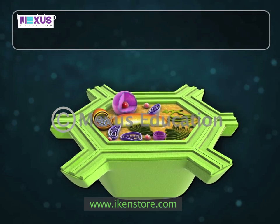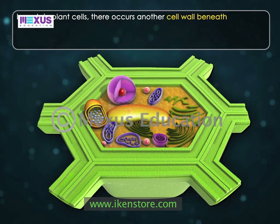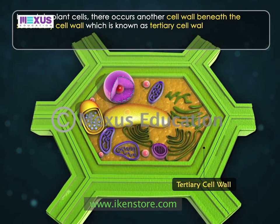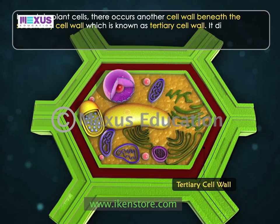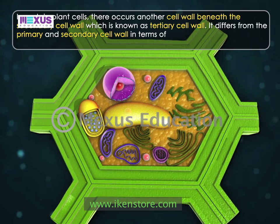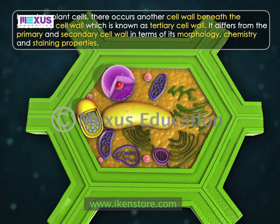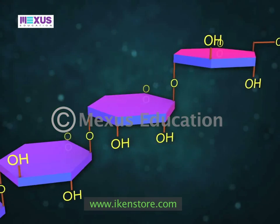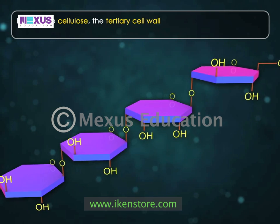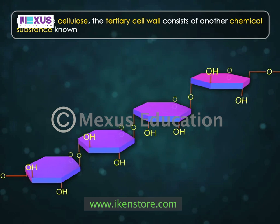In certain plant cells, there occurs another cell wall beneath the secondary cell wall, which is known as the tertiary cell wall. It differs from the primary and secondary cell wall in terms of its morphology, chemistry, and staining properties. Besides cellulose, the tertiary cell wall consists of another chemical substance known as xylan.